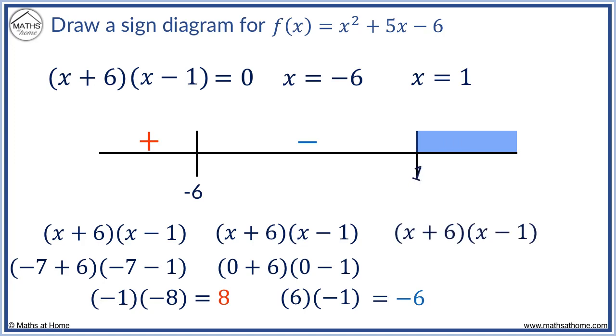For this region, we substitute x values larger than 1 such as x equals 2. This becomes 8, 1 which equals 8. This region is positive. The sine diagram is complete.